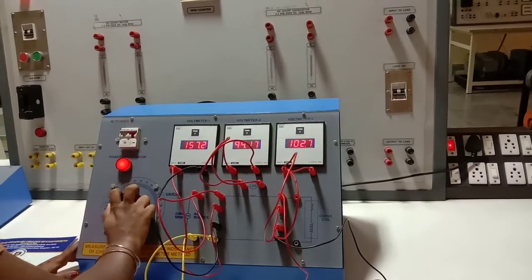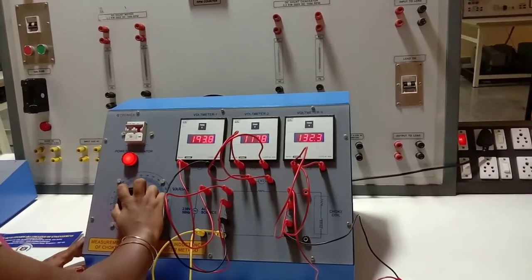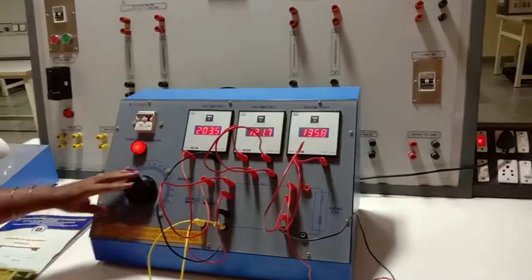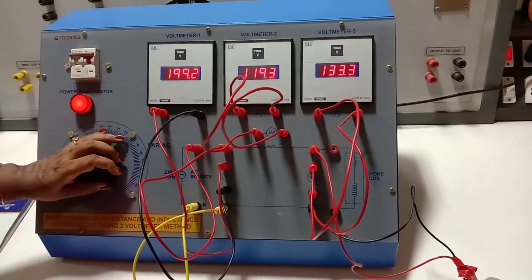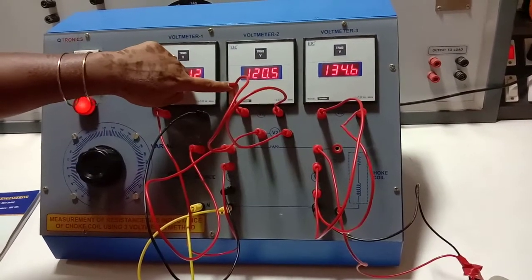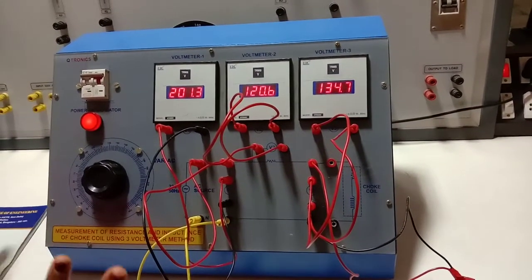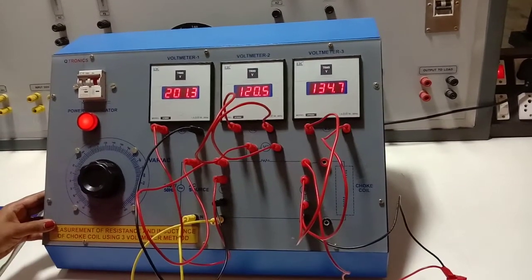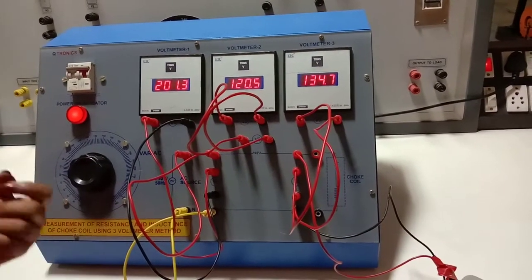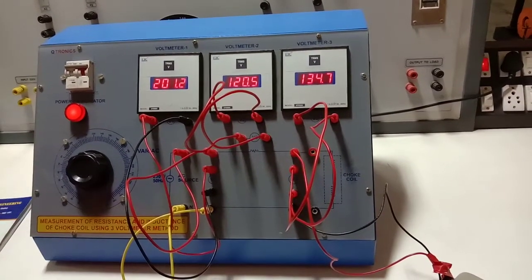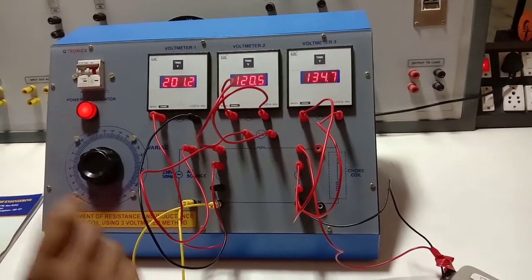The last reading I will go for 200. So 200, 203 I am getting, we will make a fine adjustment. So we are getting 200. For this, we are getting V2 as 120 and V3 as 134. This is only the readings taken part. So in the kit, you are going to take 4 readings. Once you finish this, because from this you cannot identify or find out the actual values of R and L, you have to go for the calculation. Then only you can determine what is the actual R L value of a choke coil.